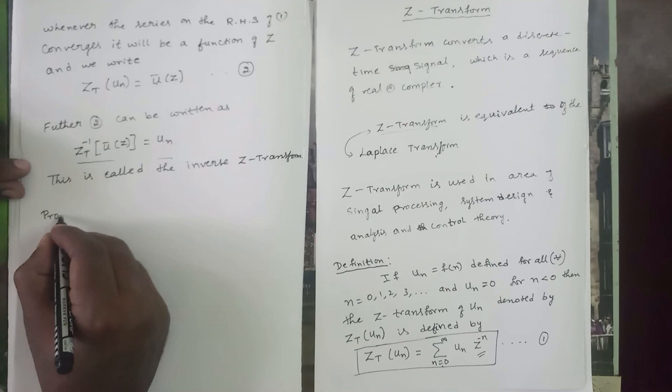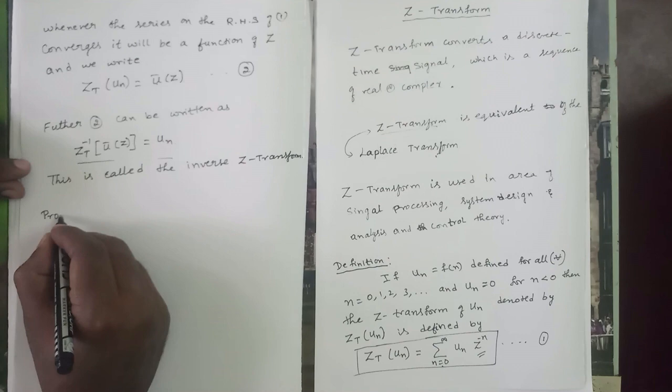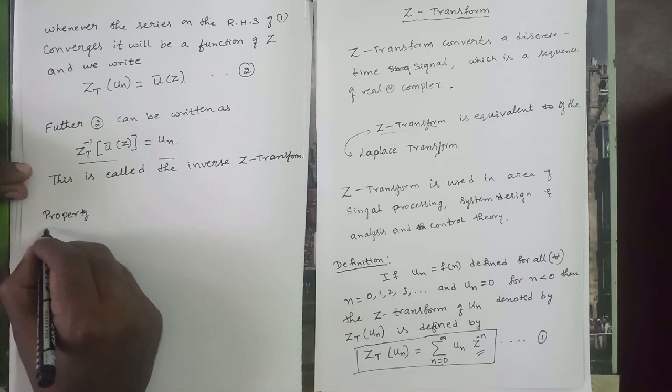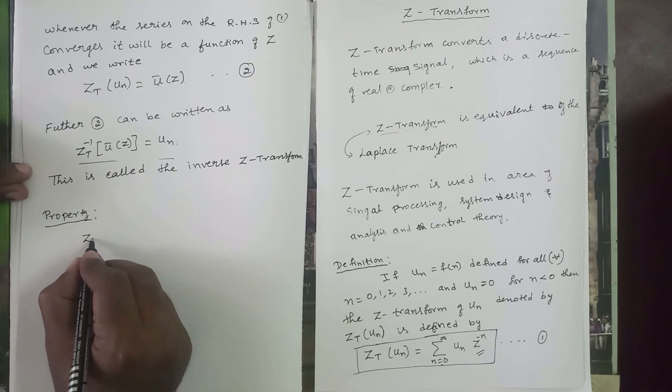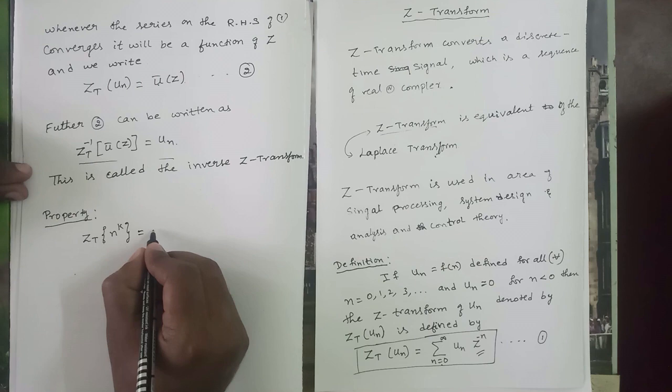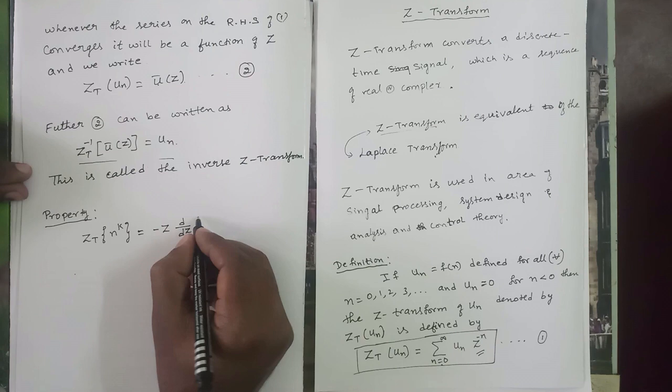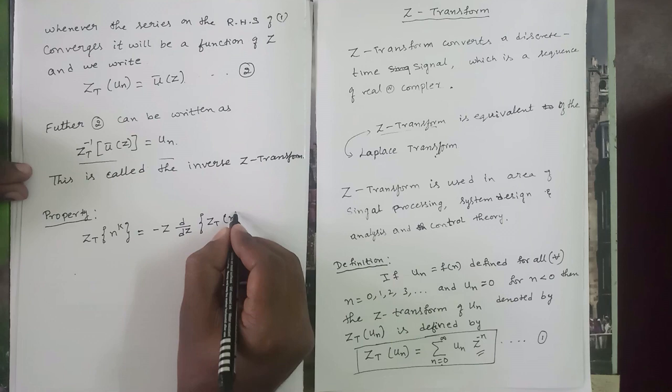Property: Z-transform of n to the power k equals minus z times d/dz of the Z-transform of n to the power (k minus 1).